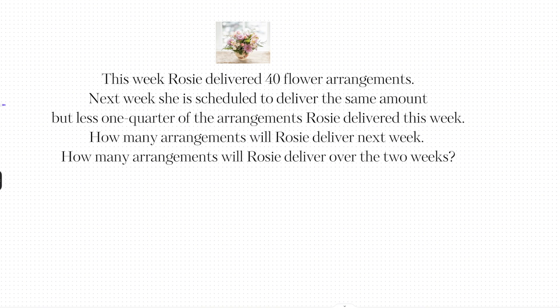Let's do another one. This week Rosie delivered 40 flower arrangements. Next week she is scheduled to deliver the same amount but less one quarter of the arrangements she delivered this week. How many arrangements will Rosie deliver next week, and how many will she deliver over the two weeks? So we have this week and next week. This week she delivered 40 arrangements. Next week she delivers the same amount but less one quarter.